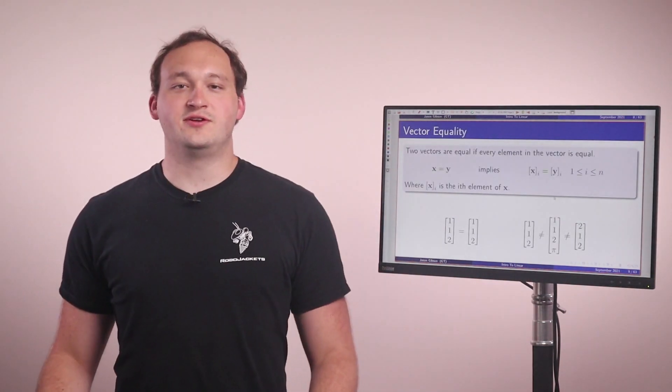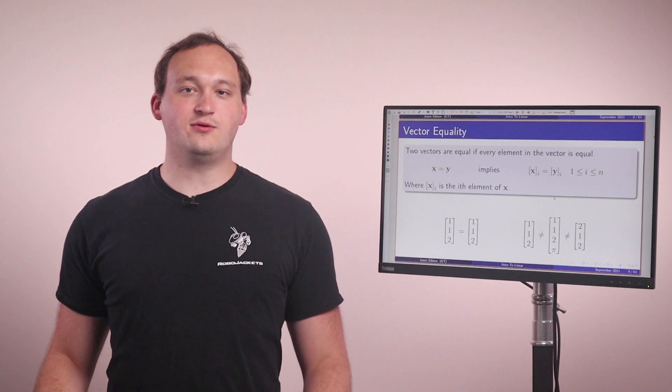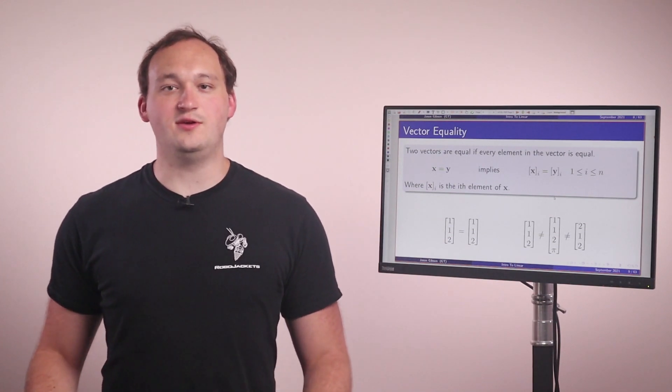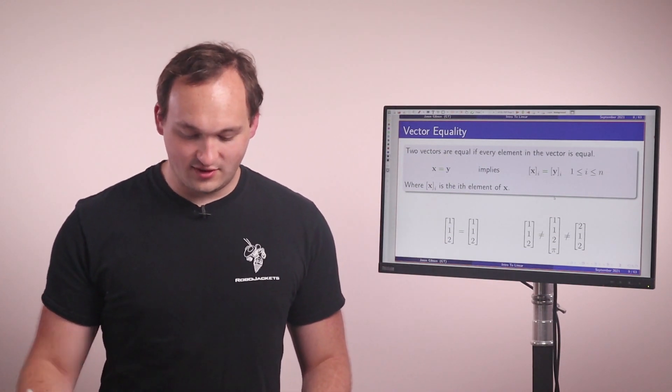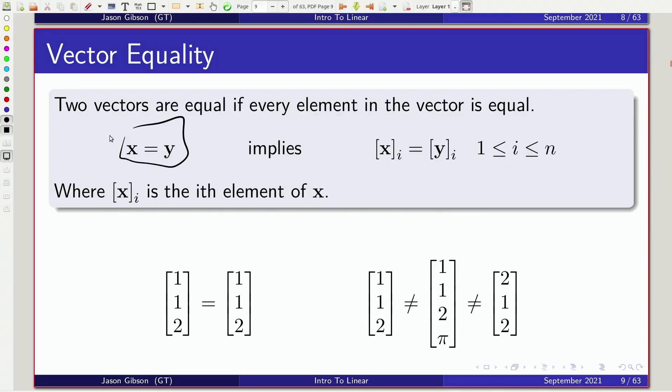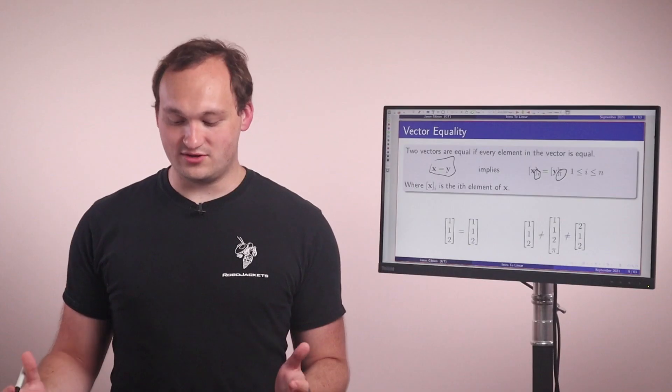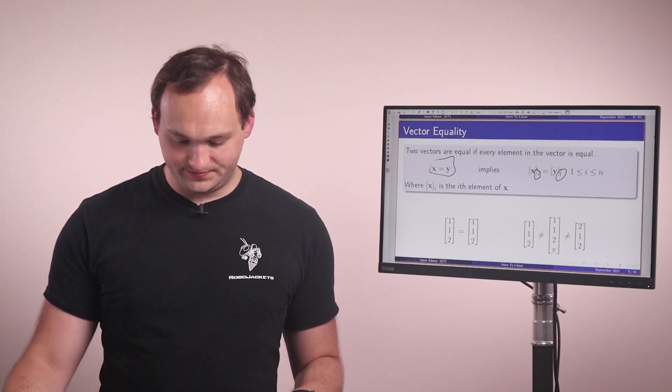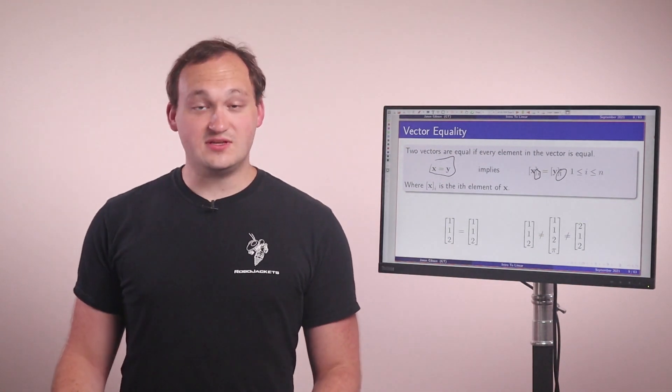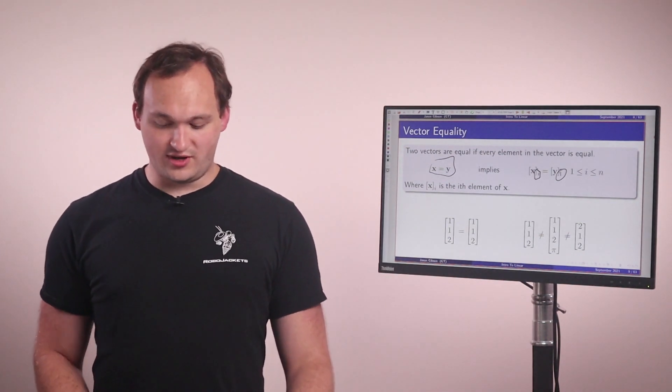So next on to vector equality. Two vectors are equal if every index of the vector is equal. So we're going to look at some basic notation here. We have a vector x and a vector y, and these two vectors are equal when every element is equal. So what I'm doing here is I'm indexing into each element, and that's what the notation i means, and since there are n possible elements in two vectors, that's why i is 1 through n. You can see some examples of equality or inequality at the bottom.